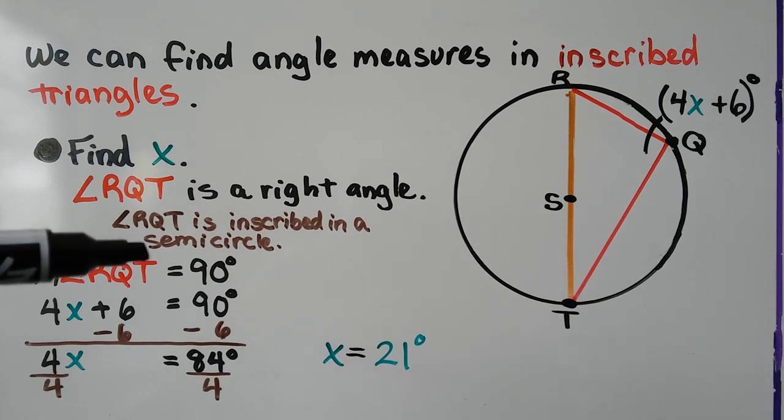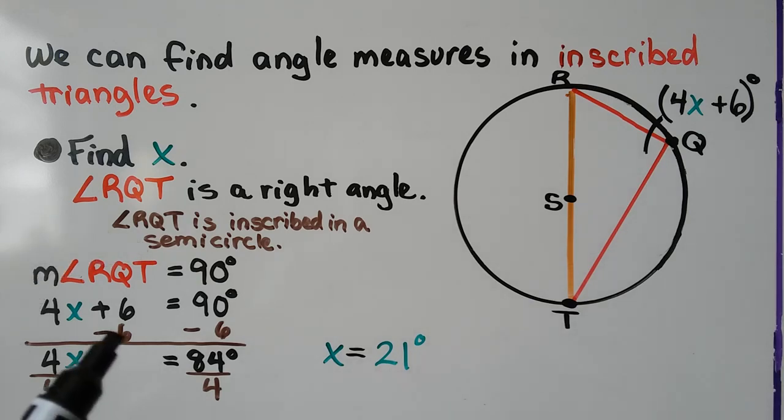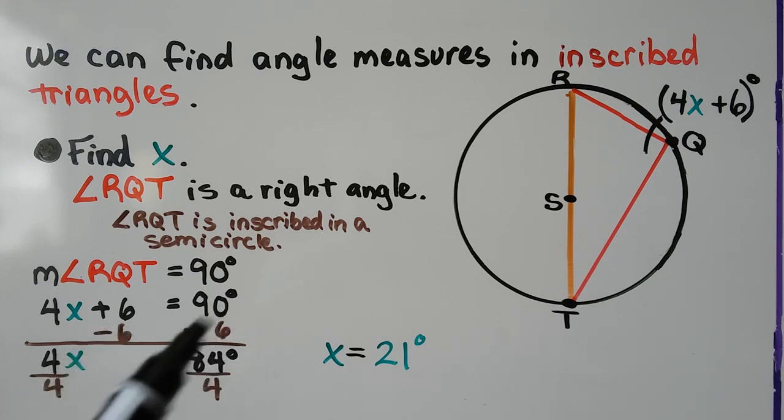We can set that as our equation and we can subtract 6 from both sides and get that 4x equals 84 degrees, divide both sides by that coefficient 4, and get that x equals 21 degrees. So we found x.